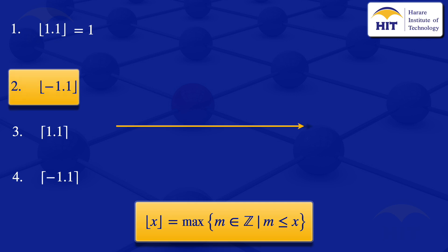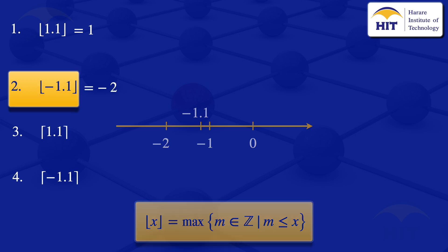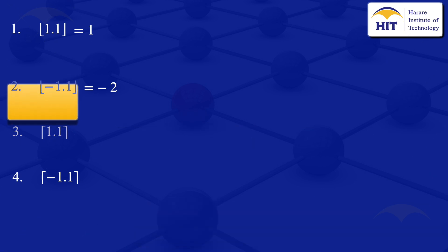Next we'll look at the floor value of minus 1.1. Again, we can visualize this by drawing a number line, starting from minus 2, minus 1, and 0. Then we can place minus 1.1 on the number line. The number directly to the left of minus 1.1 is minus 2, so the floor value of minus 1.1 is equal to minus 2.